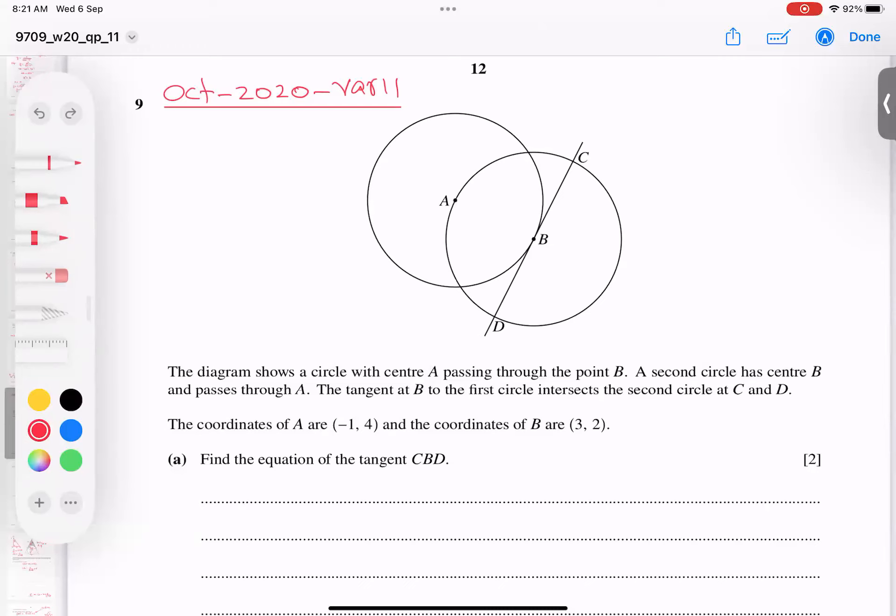And have a look here, we have two coordinates given, A given and B given. So A coordinates is given as negative 1 and 4, and B coordinates given as 3, 2. And he mentions there that we have to find equation of tangent CBD. Where is tangent? This line is called tangent, okay. So this is tangent. Alright, tangent to circle.